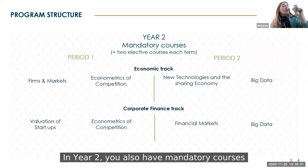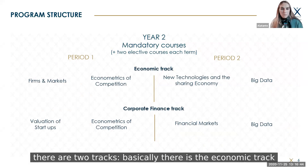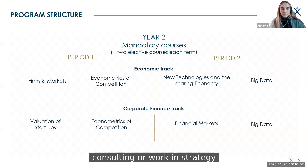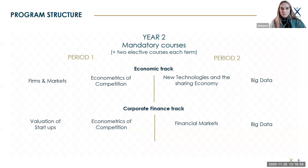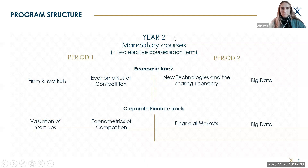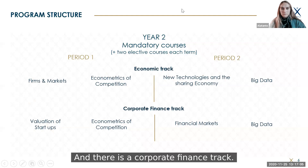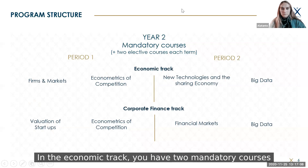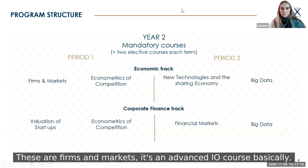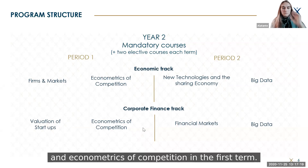In year two, you also have mandatory courses, and there are two tracks. There is the economic track for students who want to do consulting, work in strategy, or work with data in industry. In the economic track, you have two mandatory courses in the first term — firms and markets, which is an advanced IO course, and econometrics of competition.